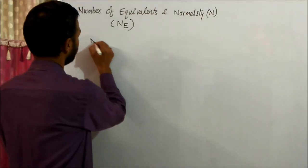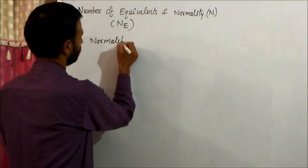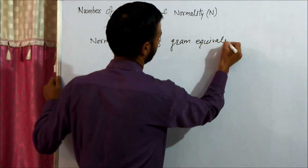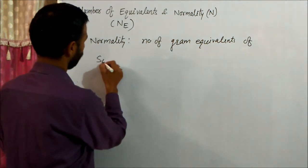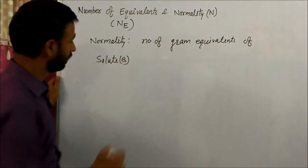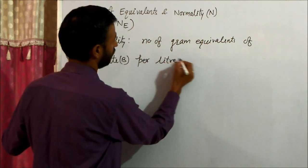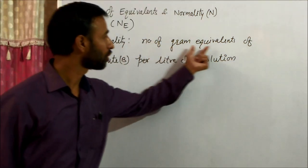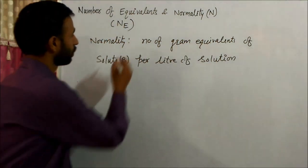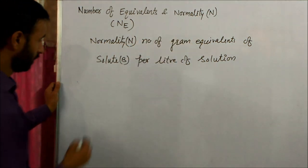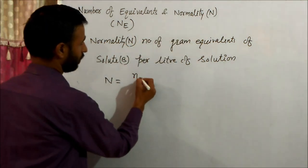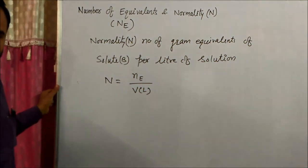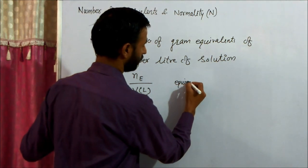Now coming to normality. Normality N is defined as the number of gram equivalents of solute per litre of solution. In one litre of solution, how many number of equivalents are present — that is called normality. It is denoted by capital N, and its unit is equivalents per litre.